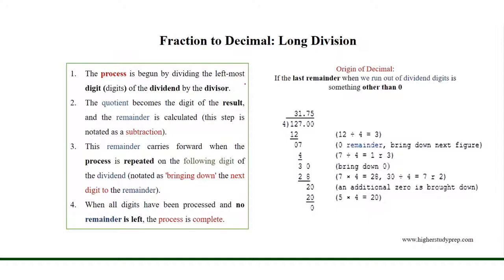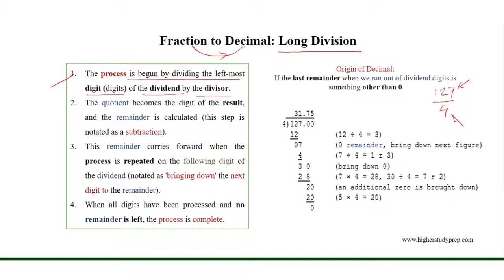If we want to obtain a decimal from a fraction, one of the processes is long division. The process is begun by dividing the leftmost digits of the dividend by the divisor. For example, we can consider the fraction 127 over 4, where the numerator 127 is the dividend and the denominator 4 is the divisor.